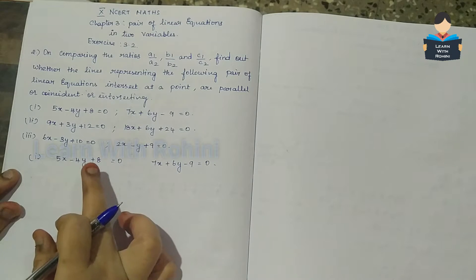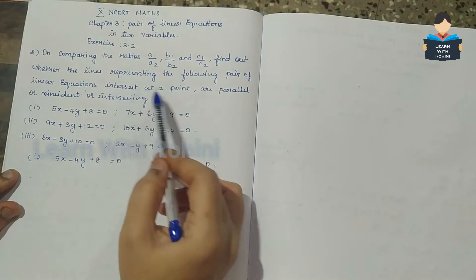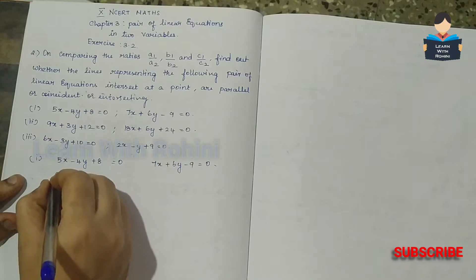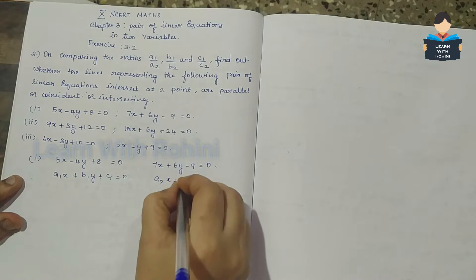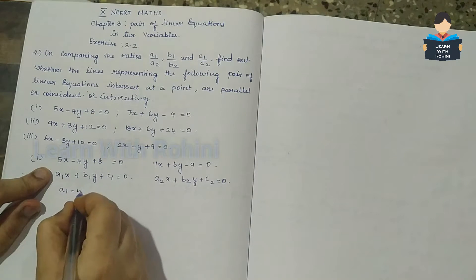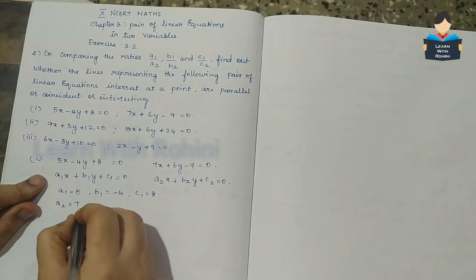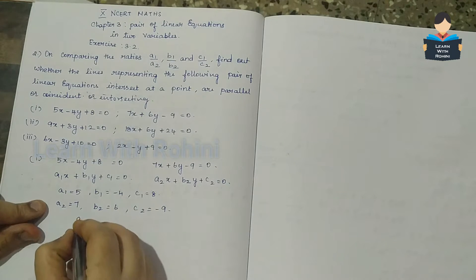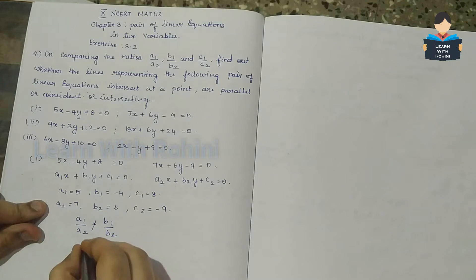From the first equation, a1 is equal to 5, b1 is equal to minus 4, and c1 is equal to 8. From the second equation, a2 is equal to 7, b2 is equal to 6, and c2 is equal to minus 9. Here, a1 by a2 equals 5 by 7, which is not equal to b1 by b2.